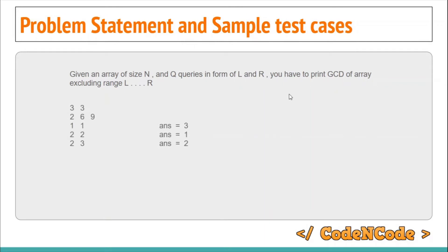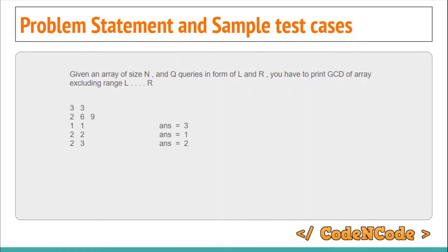So if we take the example, there are 3 elements and 3 queries. The first query says 1,1 — that is, you have to exclude the first element; the remaining are 6 and 9, and the GCD of 6 and 9 is 3. The second query says 2,2 — exclude the second element; the GCD of 2 and 9 is 1. The third query says 2,3 — exclude those two elements; the GCD of the single remaining element 2 is 2, because the GCD of a single number is that number itself.